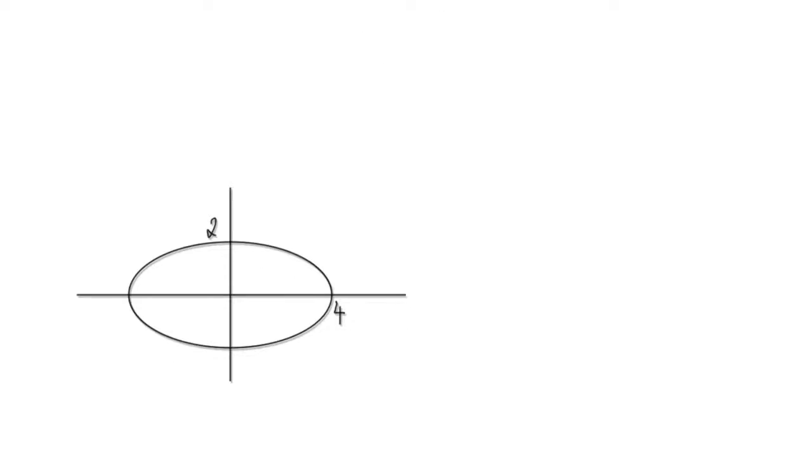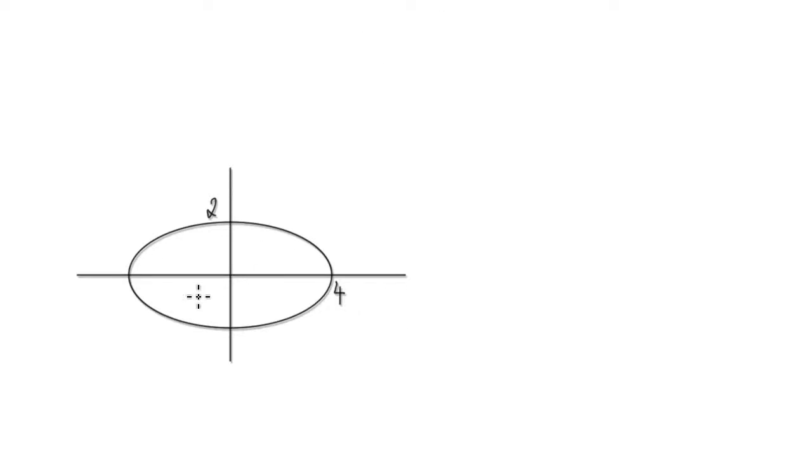In this video we're going to come up with the polar equation for an ellipse. So from here to here would be 4, from here to here would be 2.